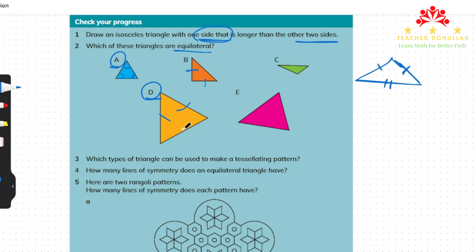Triangle C has three sides that are the same size and all three angles are equal to each other, so it is equilateral. However, triangle E is not an equilateral triangle because it is an isosceles triangle - these are its two equal sides.